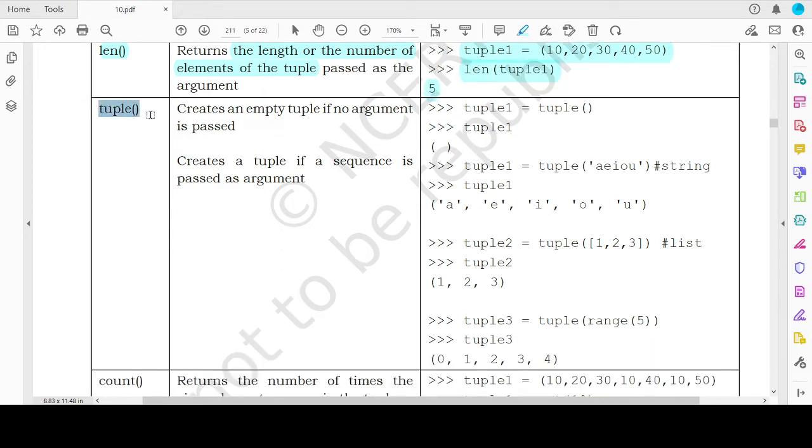Coming to the next function is the tuple function itself. So this function can be used to create an empty tuple in case you do not pass any argument to this function, or if you want to create a tuple and you want to initialize the tuple with some elements, because tuples are immutable, you won't be able to change those values. So if you want to assign elements inside the tuple as well, you can pass those elements as an argument to the tuple function. So let's take an example. If you want to create a tuple named tuple1, then you use this function tuple and round brackets and in this case an empty tuple will be created.